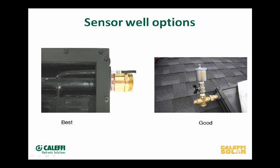We also started putting sensor wells on our collectors — a piece of copper tubing brazed right onto the header pipe that our sensor fits snugly into, inside the collector box. So now we're under the glass, against the tube that has the fluid in it. That's probably even nicer than having it on the outside, and it cleans up the look of the collector. So the cross fitting could actually be a T or an elbow depending on whether you still want the vent up there.